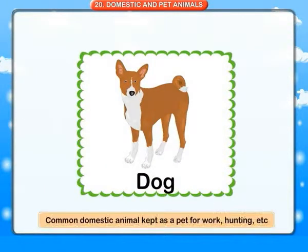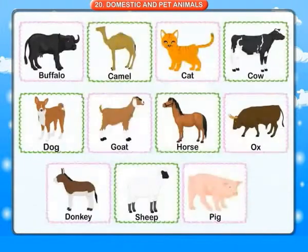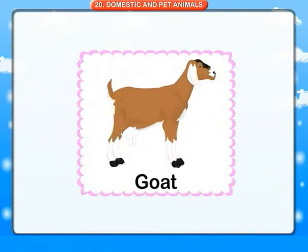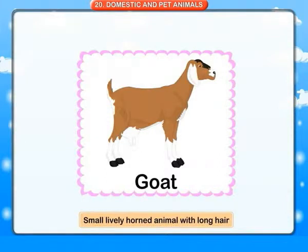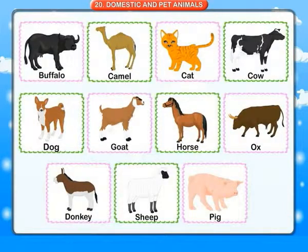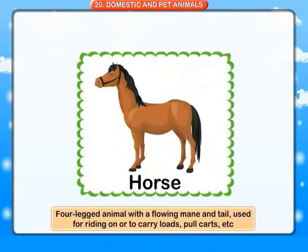Dog: a common domestic animal kept as a pet, for walking, hunting, etc. Goat: a small lively horned animal with long hair. Horse: a four-legged animal with a flowing mane and tail, used for riding or to carry loads, pull carts, etc. Ox: a male pet animal used to plough the field. Donkey: a horse-like animal used to carry loads.